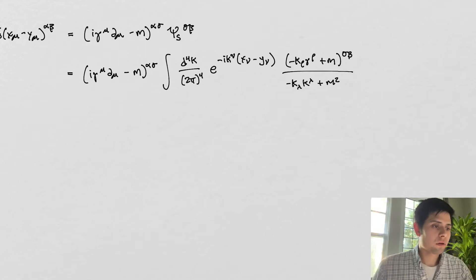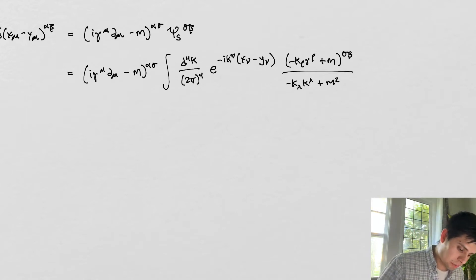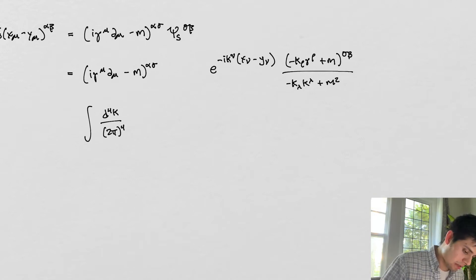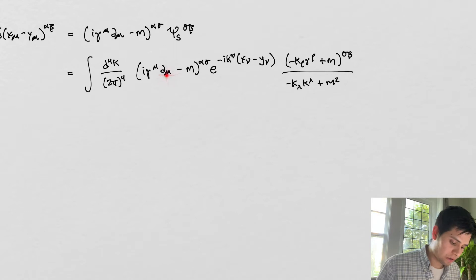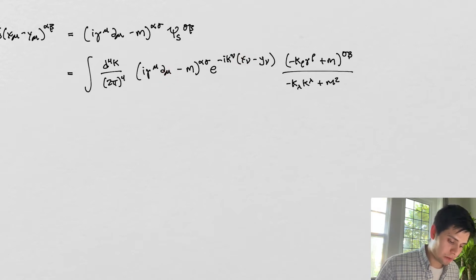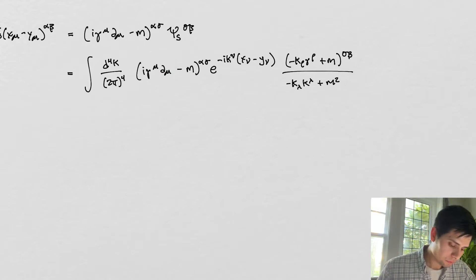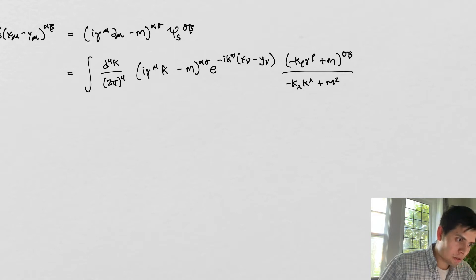So what are the things we can do here? The first algebraic manipulation is to move the derivative inside the integral — not changing anything when we do that. But once we do that, the derivative with respect to mu acts on the exponential function, and when it acts on that function it takes out a factor of k_mu. So we get a k_mu factor out front.